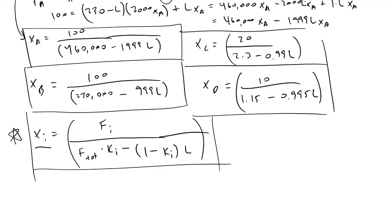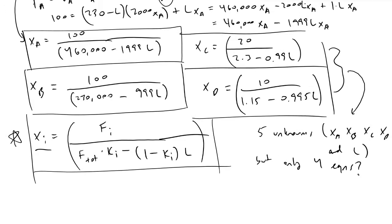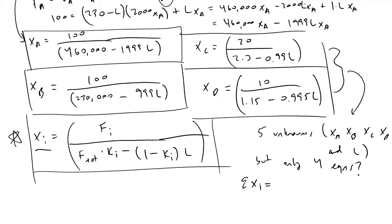The takeaway is that with these equations, we have five unknowns: x_a, x_b, x_c, x_d, and the liquid flow rate L, but only four equations. We need a fifth equation. Looking back at our main equations, we'll use the constraint that the sum of x_i must equal one. In other words, x_a + x_b + x_c + x_d must equal one.